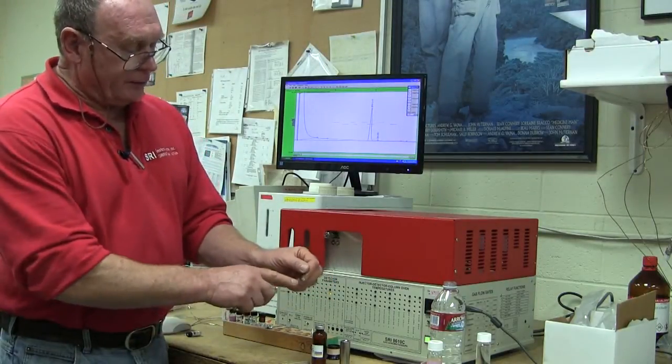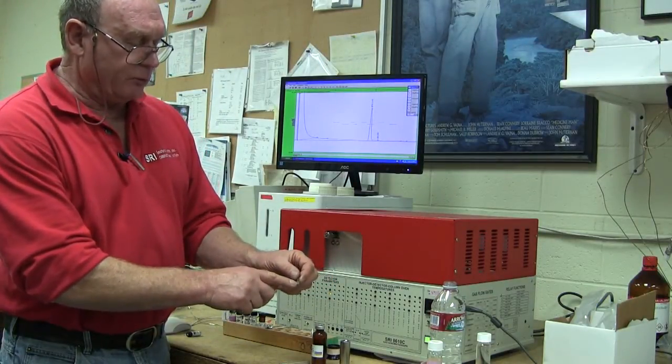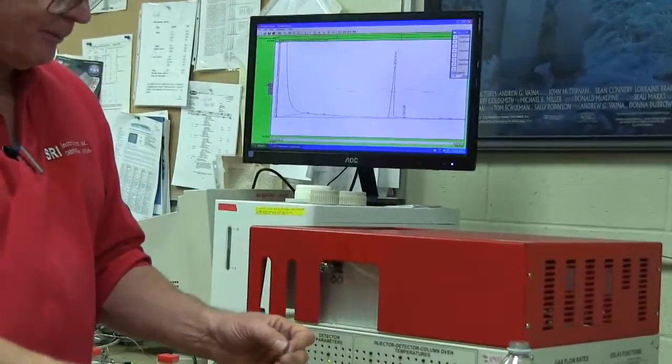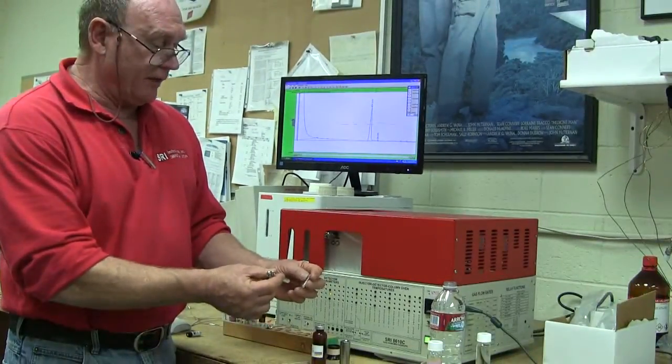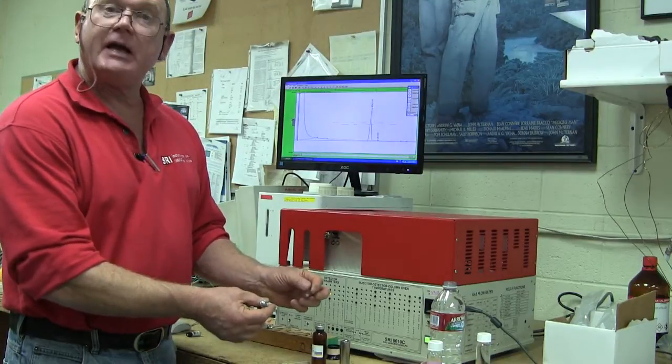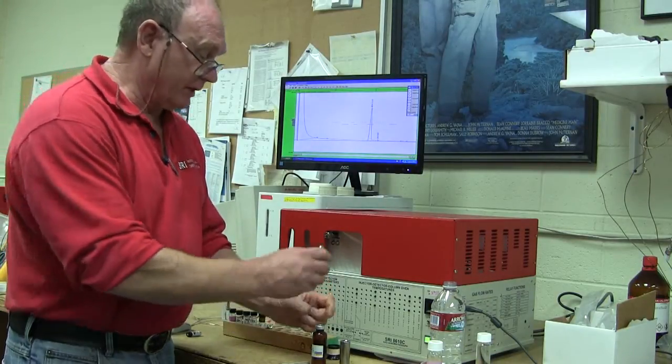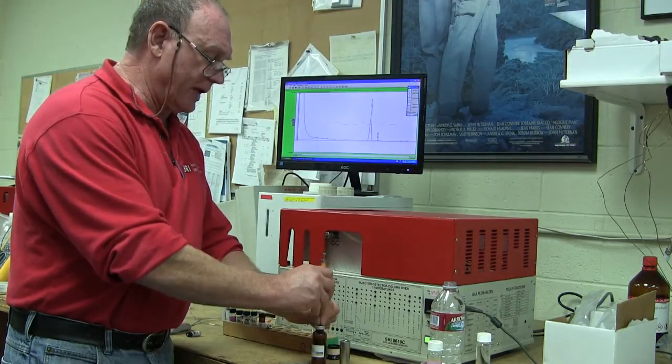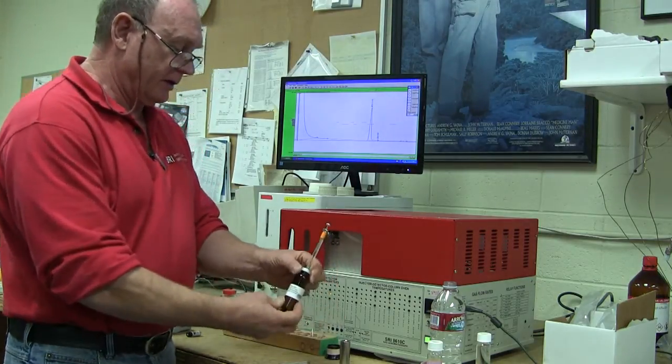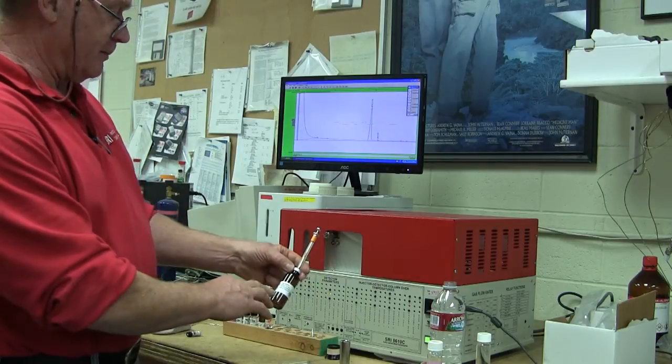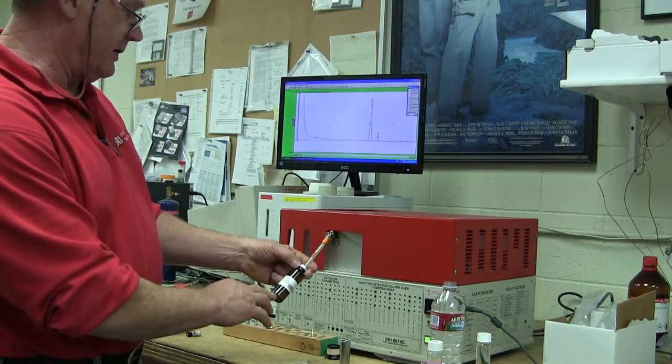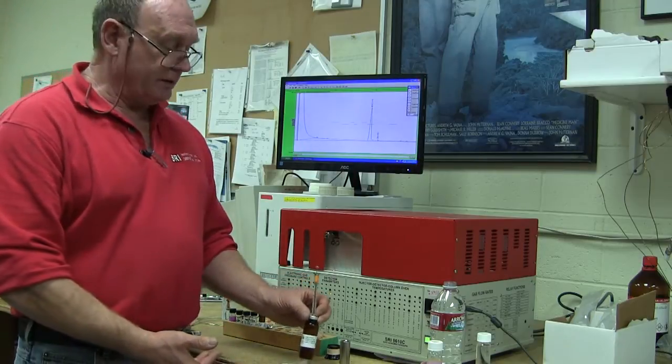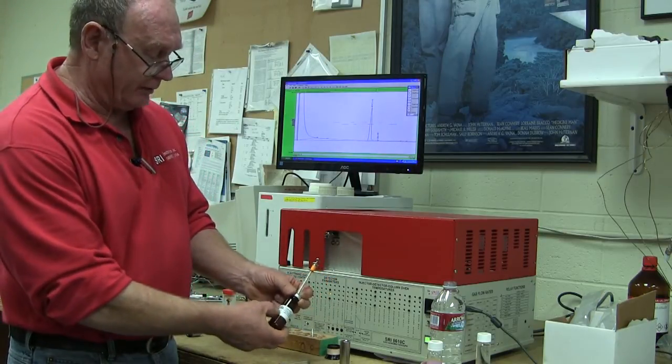So once the methanol is evaporated, you'll see that there'll be a little white or brownish kind of a sludge in the bottom of the 200 microliter vial. So we're going to re-dissolve that sludge, which is the THCA or the three cannabinoids, and we're going to dissolve it in a derivatization reagent called MSTFA, which is a very long chemical name for N-methyl-NTMS trifluoroacetamide, but we just abbreviate it as MSTFA. So you can buy this from Restec.